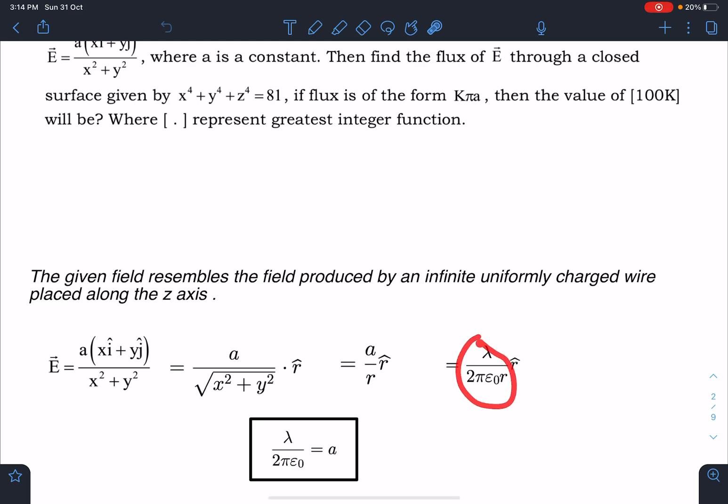Now this field is resembling the field of a wire placed along z axis. So lambda by 2 pi epsilon 0 r times r cap. Now if I compare these two, I will get the lambda of such wire which is 2 pi epsilon 0 a. So this is the one equation which we are going to use. On this concept, earlier also I have uploaded some problems. So it is just the extension of it. I hope you can see it. So this is the conversion we will be using.